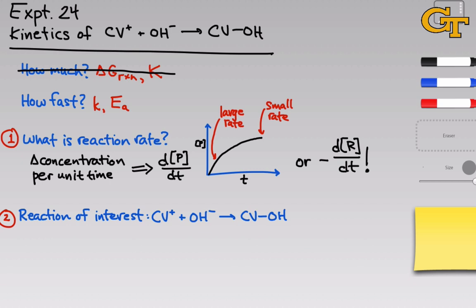Crystal violet is a cationic species and it's going to react with hydroxide to form an adduct with a new covalent bond between oxygen and carbon. Crystal violet is a carbocation with a positive charge on carbon; hydroxide is a negatively charged anion. They form a bond to one another to form the R₃C-OH compound. The stoichiometry of the reaction is one-to-one: the reactants are coming together in a one-to-one ratio to form the products.